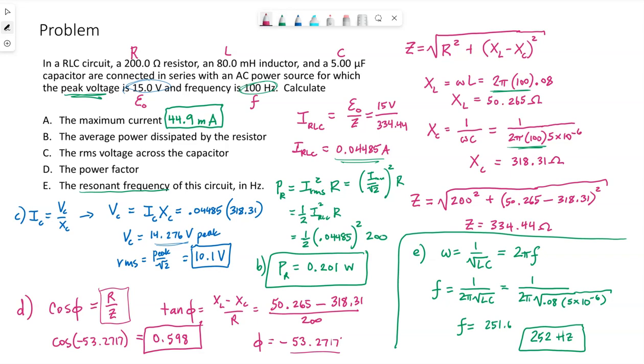If you recall, resonance means Z equals R. So the current would go from what we currently have at 44.9 milliamps. If we change this to resonance, we would just take the source voltage over R, and we would have 75 milliamps as the peak current. So we maximize the current by putting a circuit in resonance.